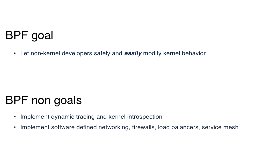Non-goals are equally important. When we started pushing patches into the kernel back four-plus years ago, people were saying, 'Oh, you're trying to do DTrace in the kernel,' or 'BPF is actually there to replace OVS or IP tables.' This constant fight for turf was there from day one because people misunderstood what BPF is trying to achieve. Yes, you can do dynamic tracing, yes you can do full kernel introspection with BPF, but that's a non-goal for the architecture and instruction set as a whole.